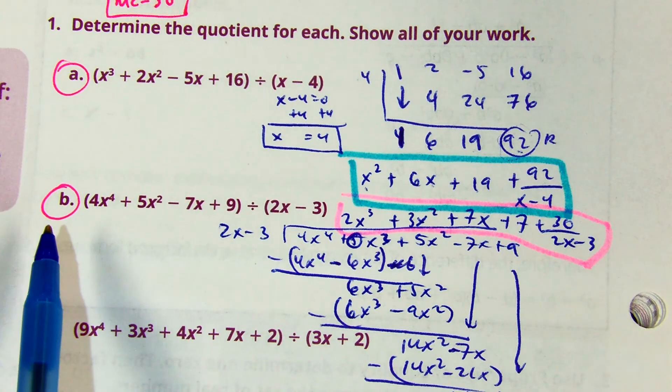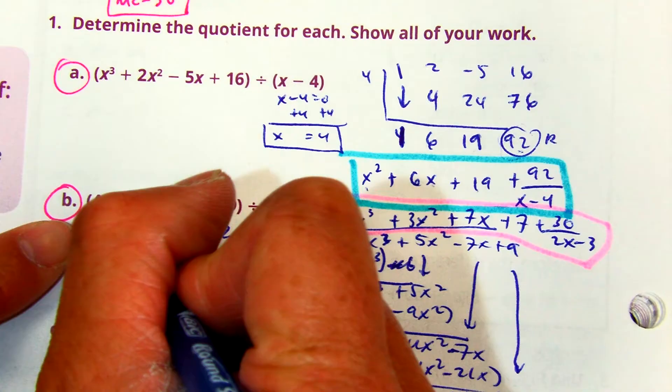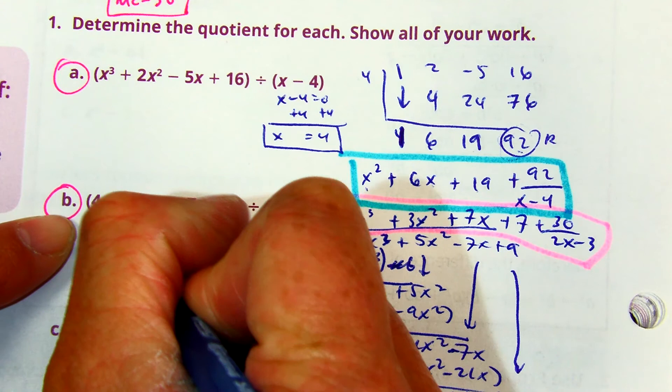Question 1b was a little bit tricky because you actually are missing a placeholder. You have to add a 0x cubed. Raise your hand if you saw that.